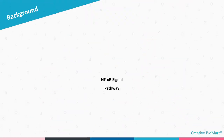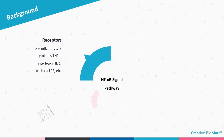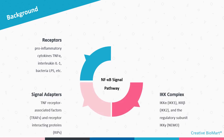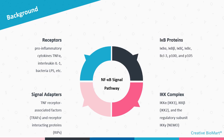First, background of NF-Kappa-B signal pathway. The most basic components of NF-Kappa-B signaling pathways include receptors, signal adapter proteins, I-Kappa-B kinase complex, I-Kappa-B protein, and NF-Kappa-B dimer.